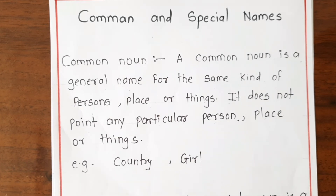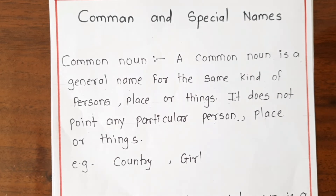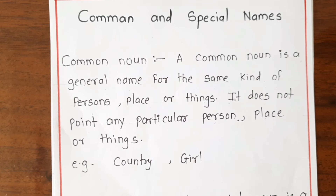For example, the word 'country' and 'girl' — no specific country or girl's name is mentioned. So these are common nouns.